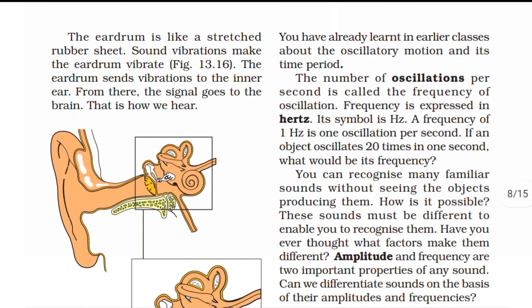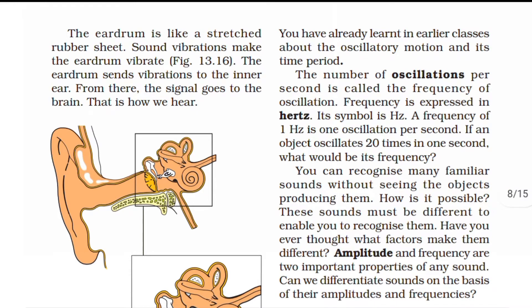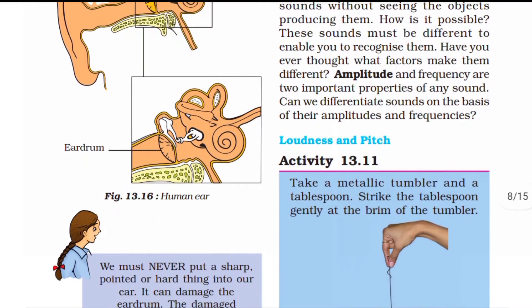From this activity we learn that the eardrum is like a stretched rubber sheet. Sound vibrations make the eardrum vibrate, and the eardrum sends these vibrations to the inner ear. From there, a signal goes to the brain and we can hear sounds.